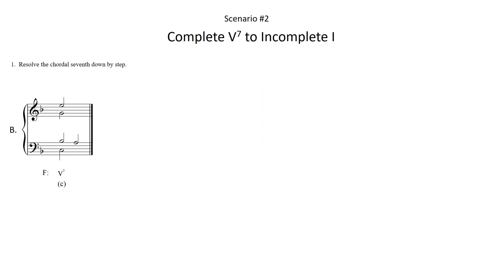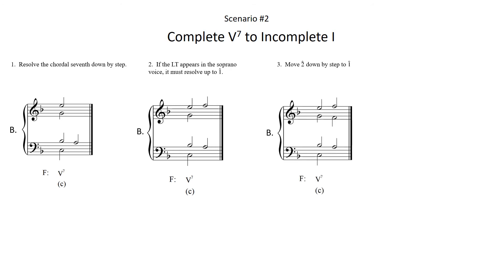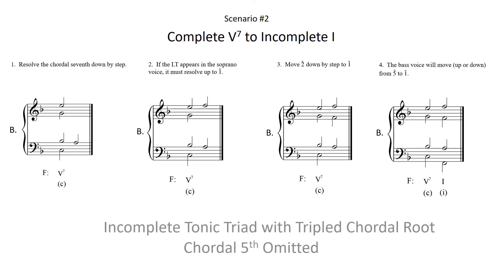As always, first resolve the chordal 7th down by step. Next, if the leading tone appears in the soprano voice as is the case here, it must resolve up to scale degree 1. Then move scale degree 2 down to scale degree 1. And finally, the bass will move from scale degree 5 to scale degree 1, which is inherent to the root position progression. Notice that this creates an incomplete tonic triad with a tripled chordal root and a chordal 3rd. When the leading tone is in the soprano voice as part of a complete dominant 7th chord, the resulting tonic triad will be incomplete. Don't be afraid of the incomplete tonic triad; instead, embrace the tripled chordal root as it's common within this specific idiom.